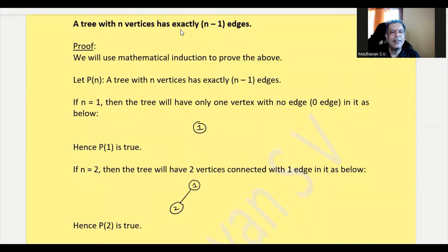A tree with n vertices has exactly n minus 1 edges. We will use mathematical induction to prove this.